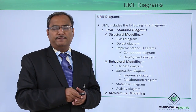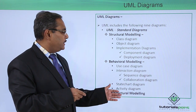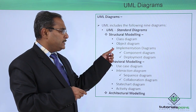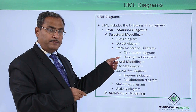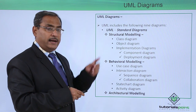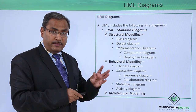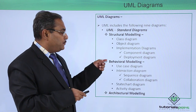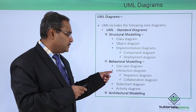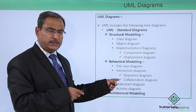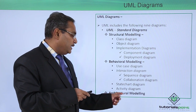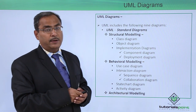Here all the different diagrams are listed in one slide for a complete view. Under structural modeling we have the class diagram, object diagram, and implementation diagrams consisting of the component diagram and deployment diagram. Under behavioral modeling, which depicts the dynamic nature of the system, we have the use case diagram, interaction diagram with two subtypes — sequence diagram and collaboration diagram — and the activity diagram. Under architectural modeling we have the package diagram.